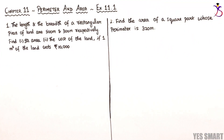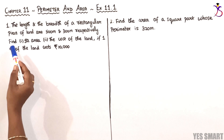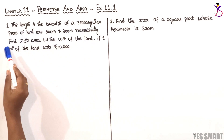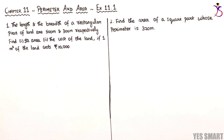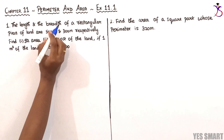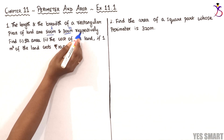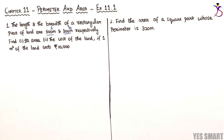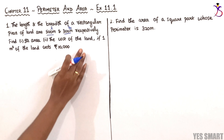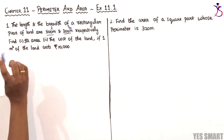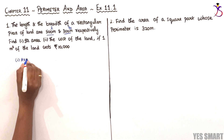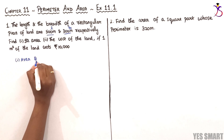Chapter 11: Perimeter and Area, Exercise 11.1. In the first sum, the length and breadth of a rectangular piece of land are 500 meters and 300 meters respectively. We need to find its area, and also the cost of the land if one meter square costs rupees 10,000. Area of the land equals length into breadth.